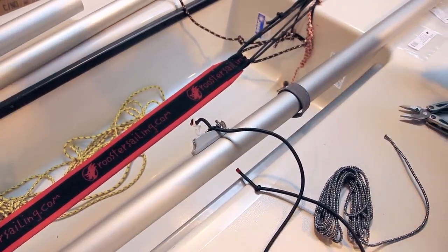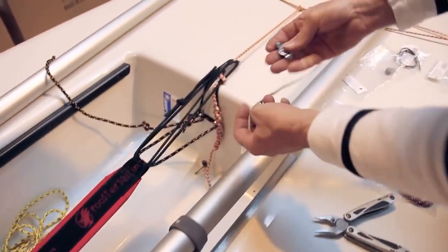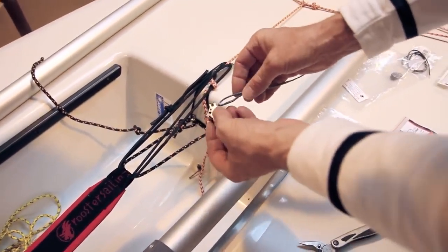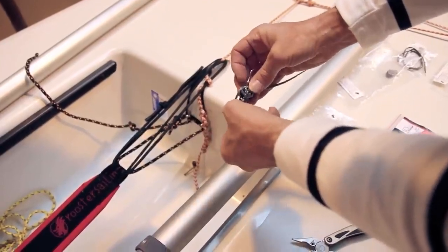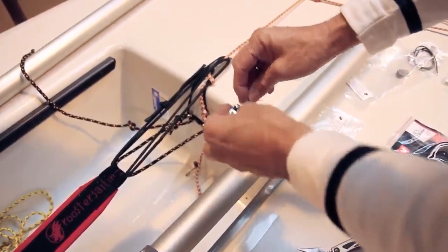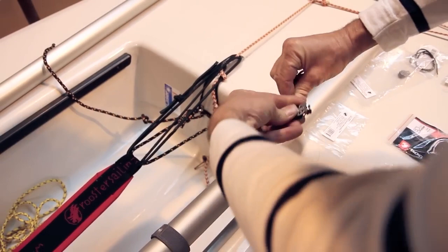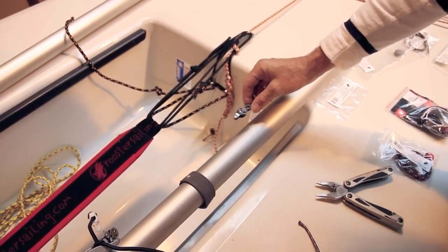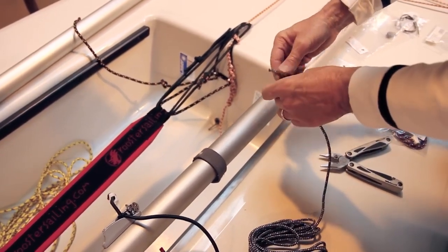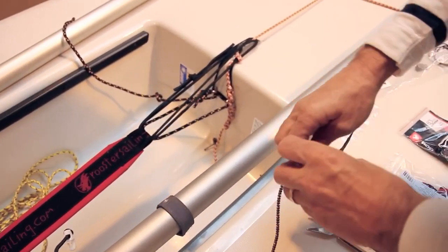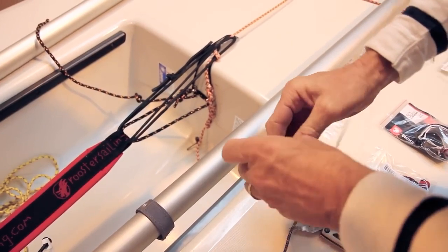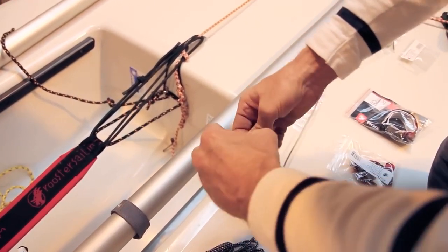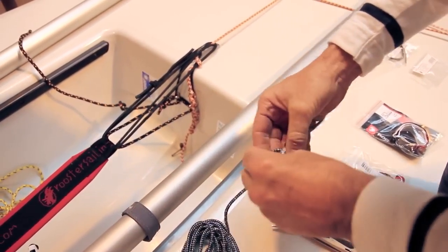So on the outhaul, I'm now going to cow splice my becket block on the end of my outhaul loop, just by simply passing the loop through the end of the block. And now what we have to do is attach our control line to that block. Probably the best way is an overhand on an overhand.